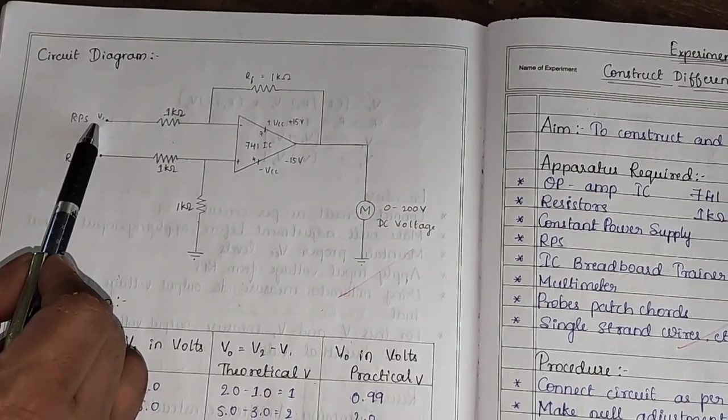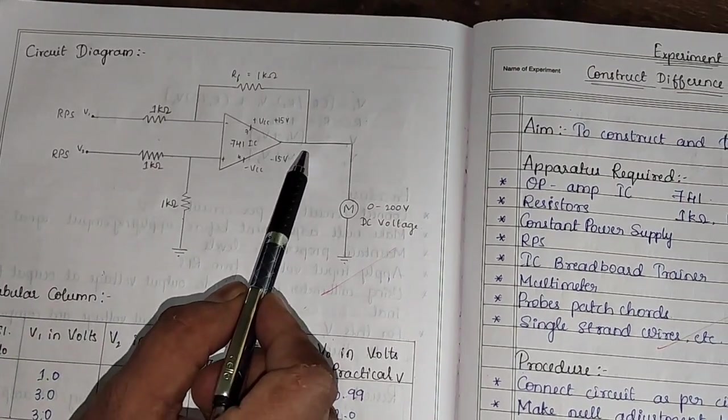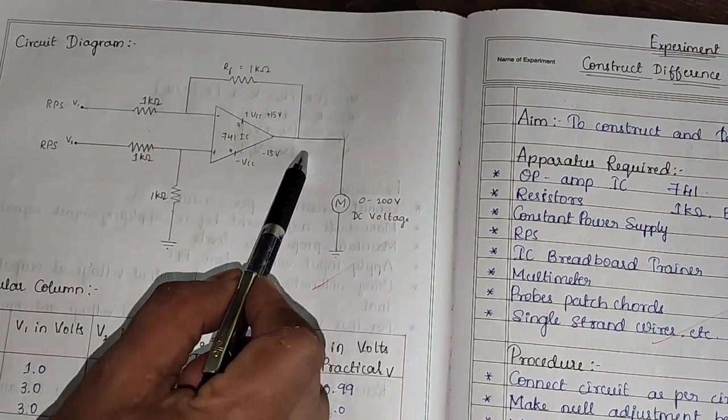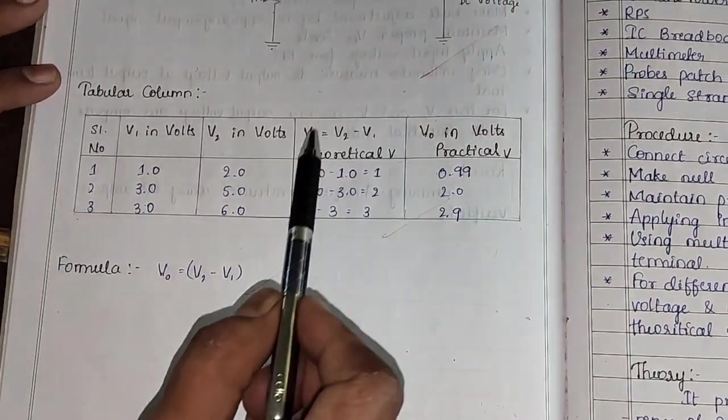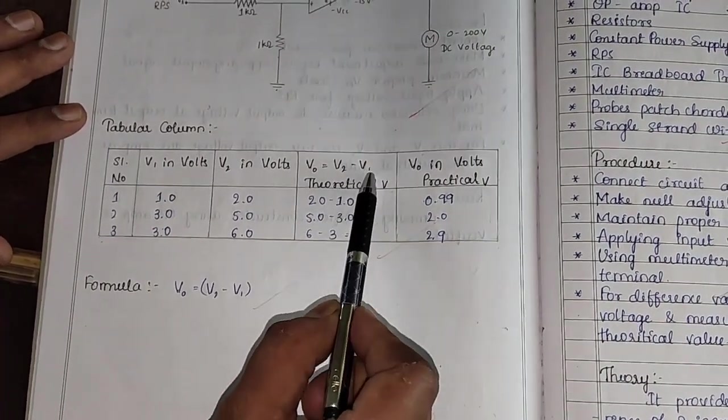V1 is a DC voltage, V2 also DC voltage. At pin number 6 we obtain DC voltage. But based on formula, the V0 is equal to V2 minus V1.